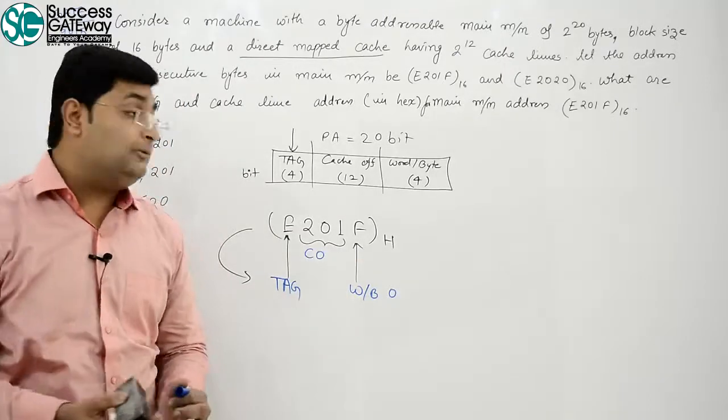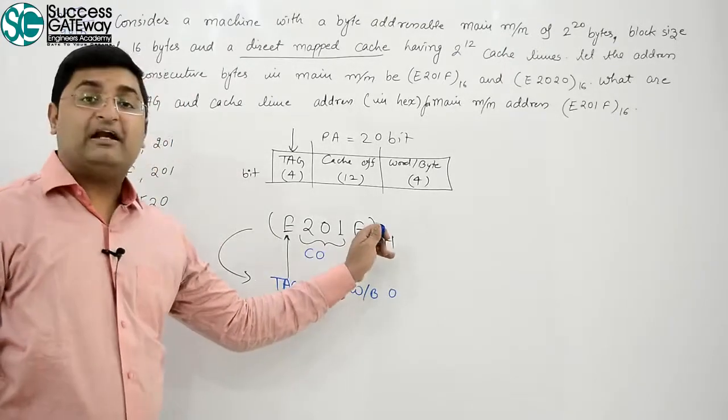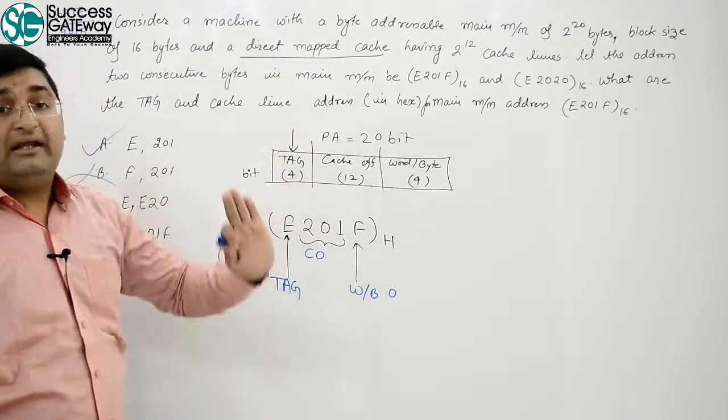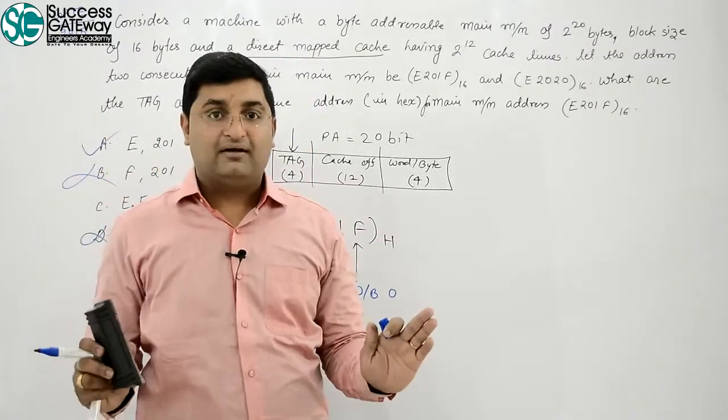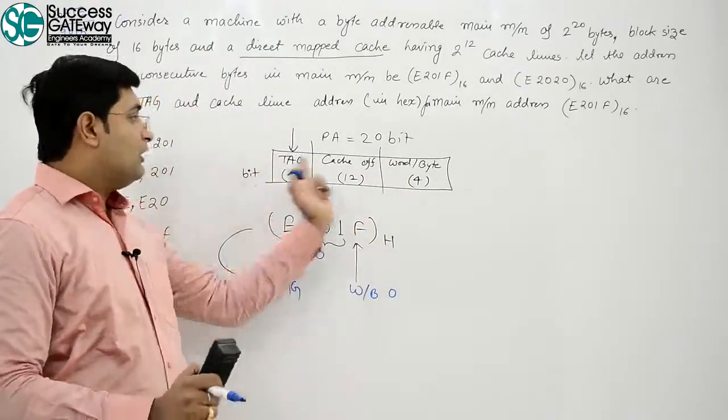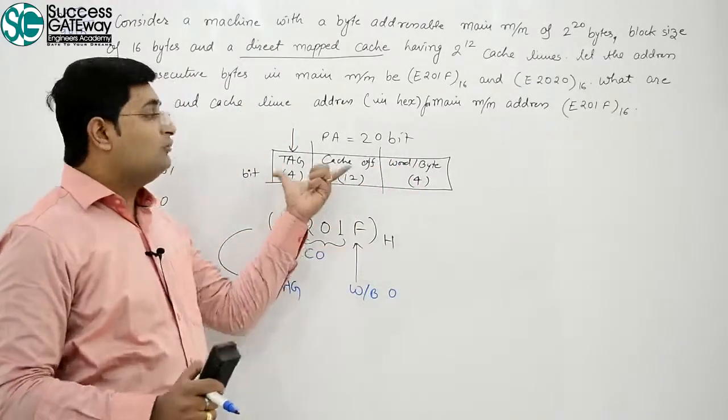If you ask this word offset, then word offset is F. Yeah, byte offset, because it has said that memory is byte addressable. Gotta find, you simply what do you want to do? Which is your physical address, you can divide in three sections.